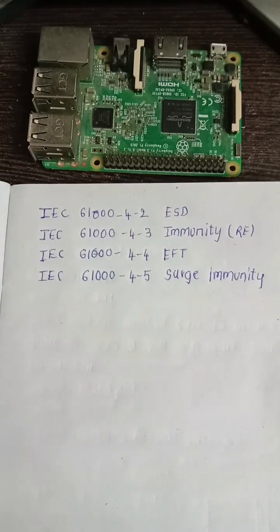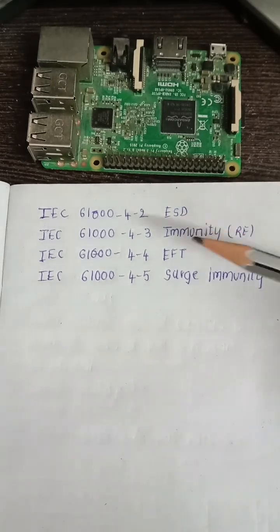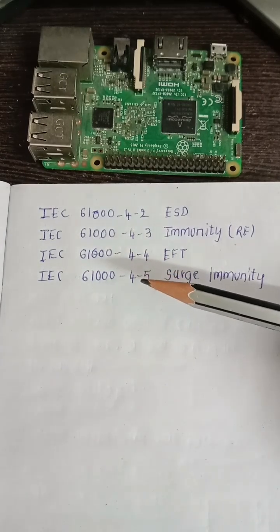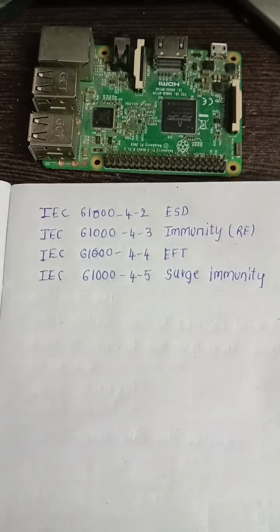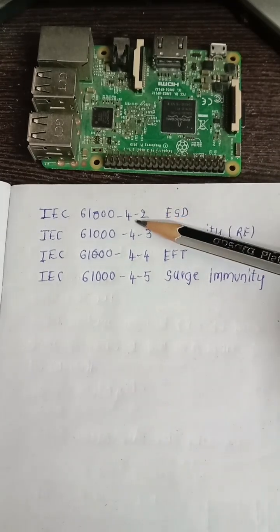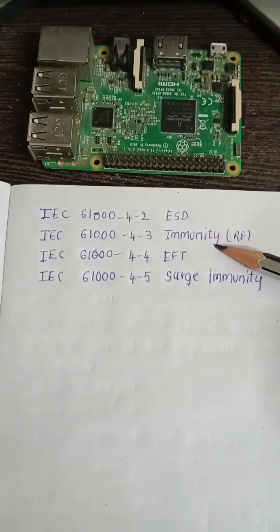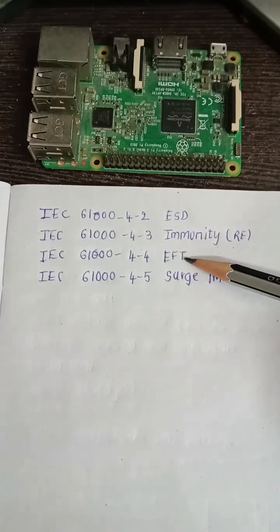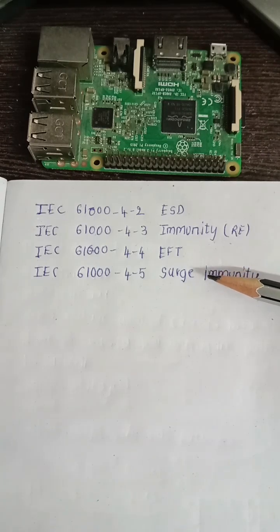Here is a list of some of the IEC standards used for the boards designed. These are basically the compliance tests that are performed on the embedded boards. IEC is the International Electro-Technical Commission, which defines the standards. IEC 61000-4-2 is for ESD, IEC 61000-4-3 is for RF immunity, IEC 61000-4-4 is for EFT, and IEC 61000-4-5 is for surge immunity. Not all these standards are used for the boards, so designers do have specifications where they apply them.